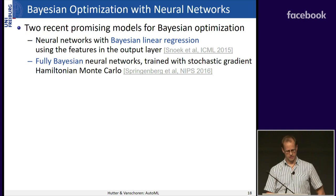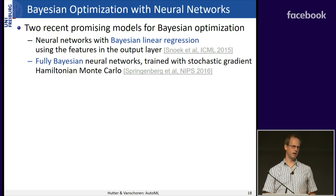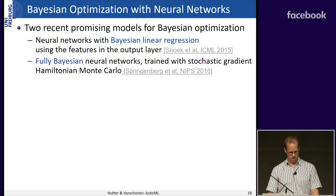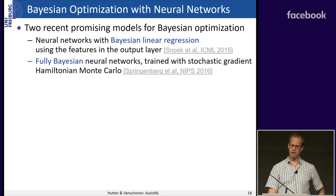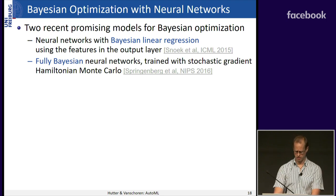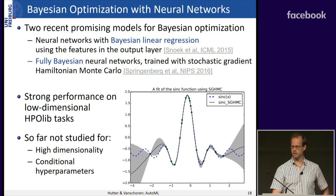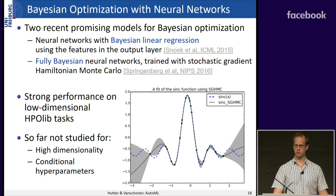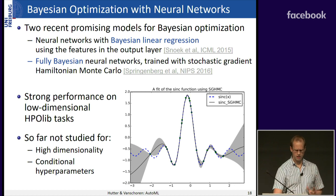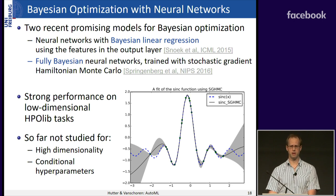There's also work on Bayesian optimization with neural networks. One approach, called DNGO (Deep Networks for Global Optimization), fits a standard neural network and does Bayesian linear regression on the learned features in the last layer. A follow-up uses fully Bayesian neural networks trained with stochastic gradient HMC for a full Bayesian interpretation. These networks give very good predictions with low uncertainty where there's lots of data, and large uncertainty where there's little data. However, this hasn't yet been studied for high-dimensional, conditional, or discrete spaces — an important area for follow-up.